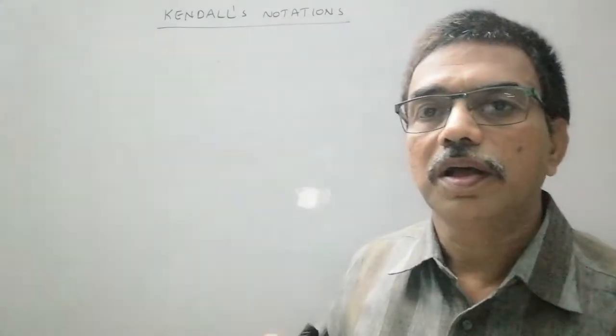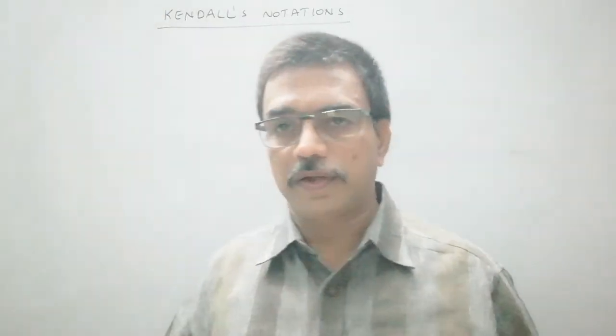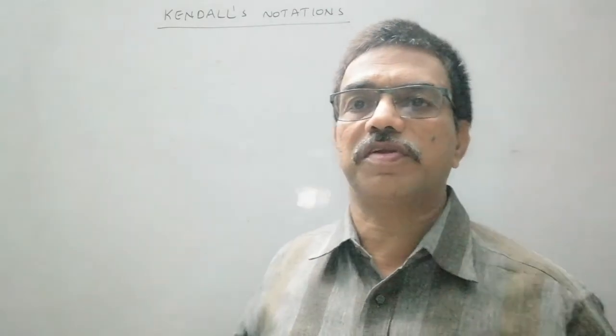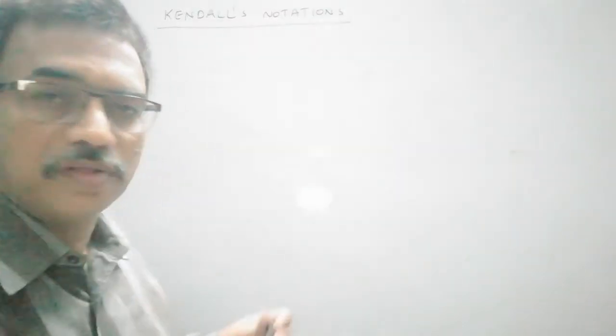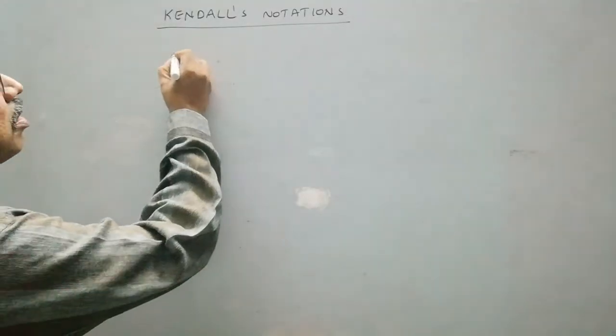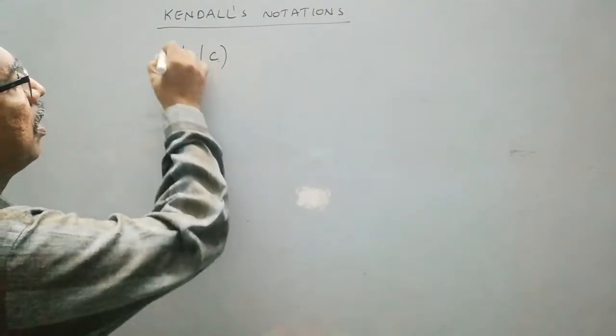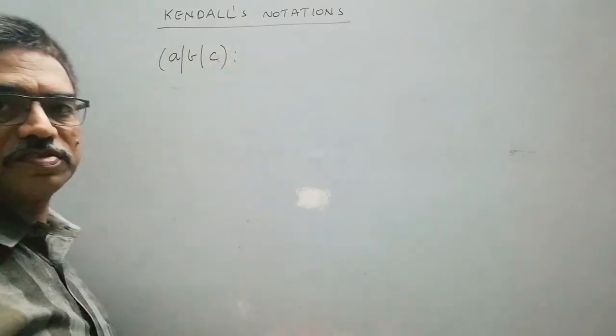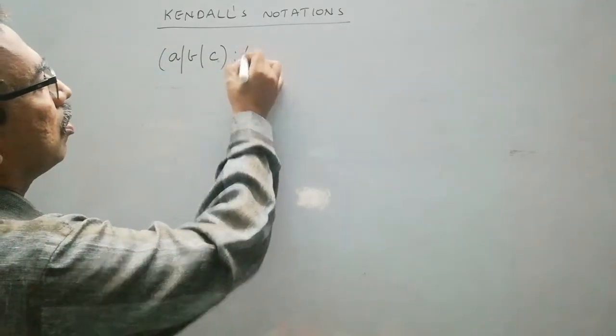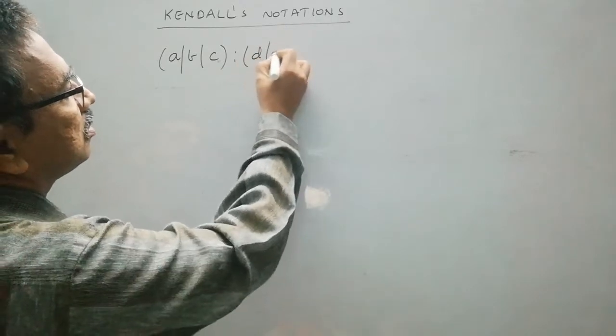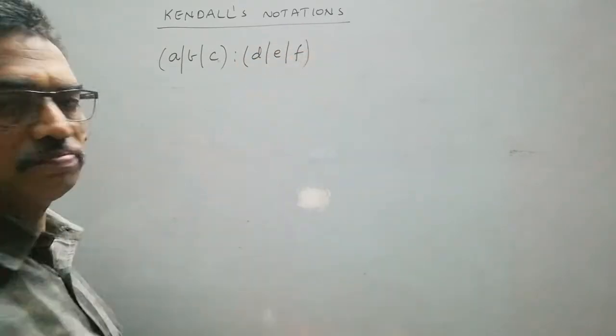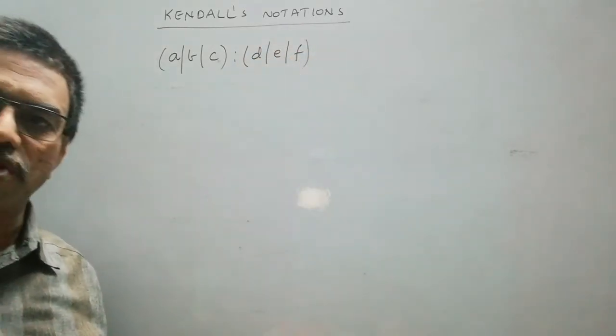Now in this video, I am going to explain different models in queuing theory and how Kendall's notation is used to represent a queuing model. In general, a queuing model is designated in this form: A slash B slash C colon D slash E slash F. This is the designation of any queuing model.